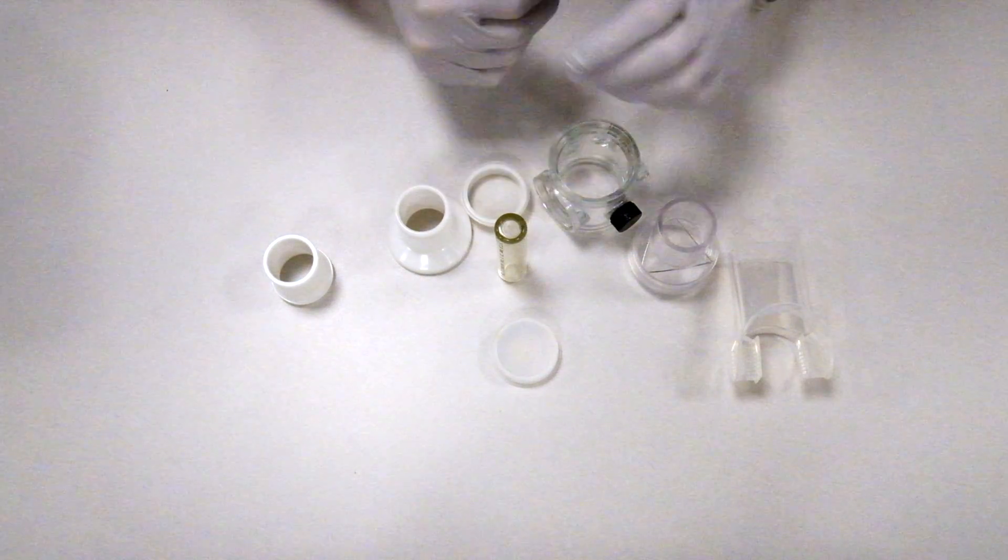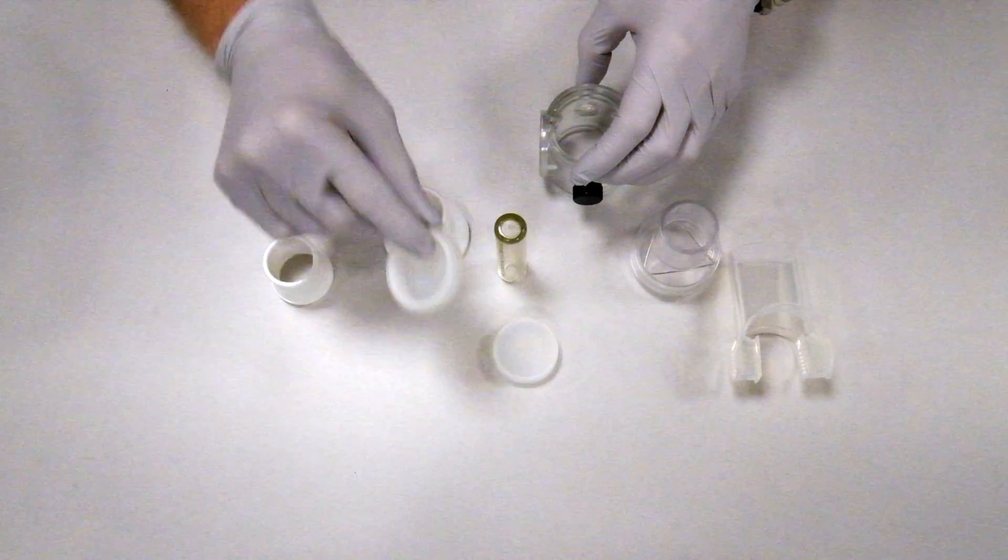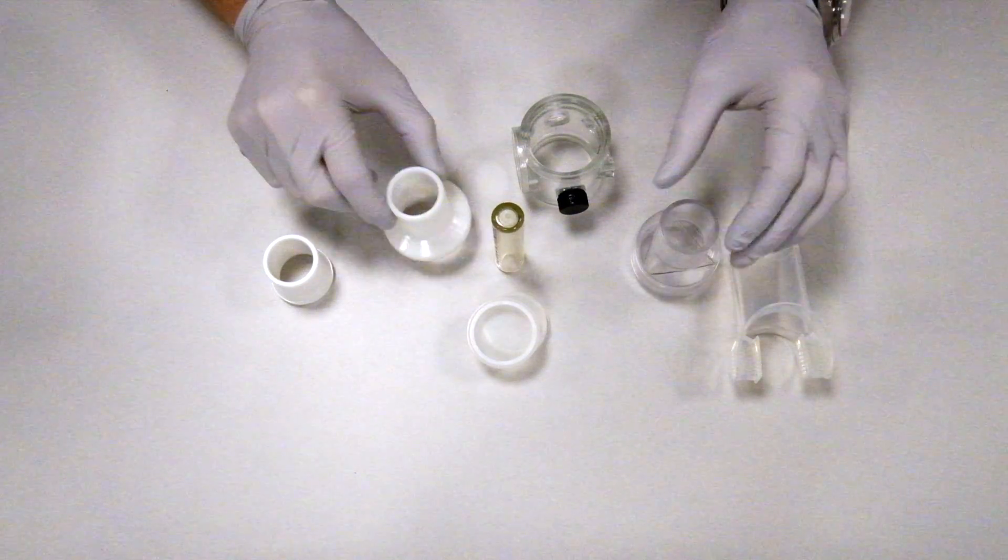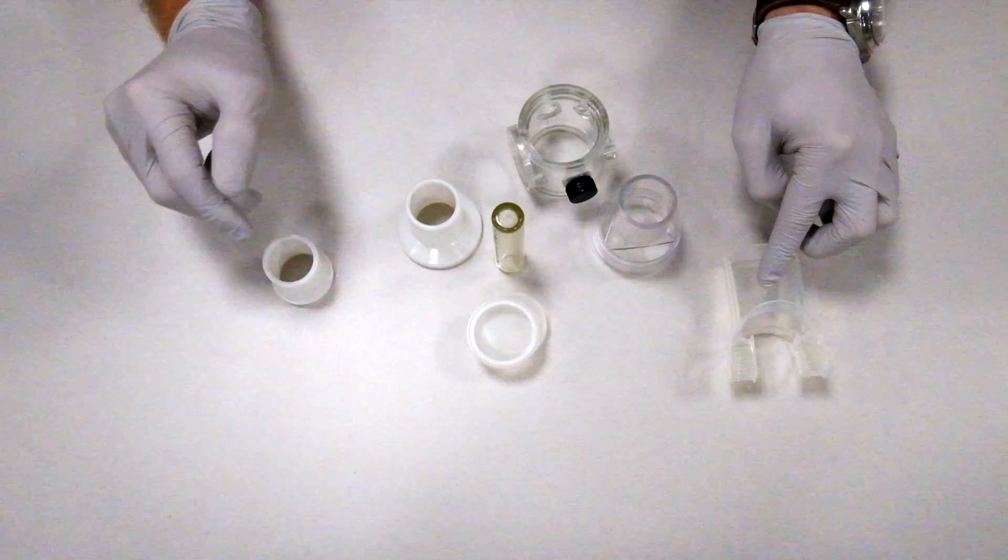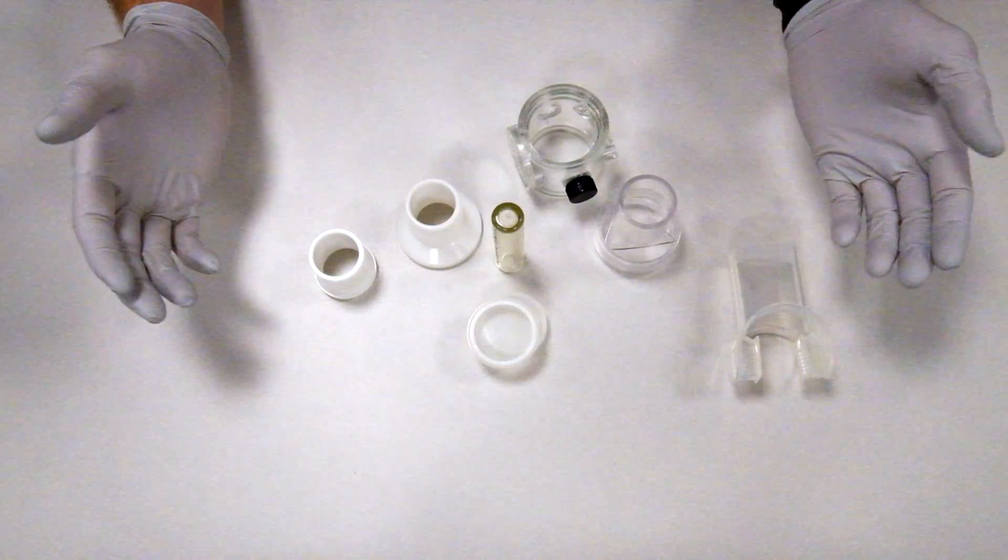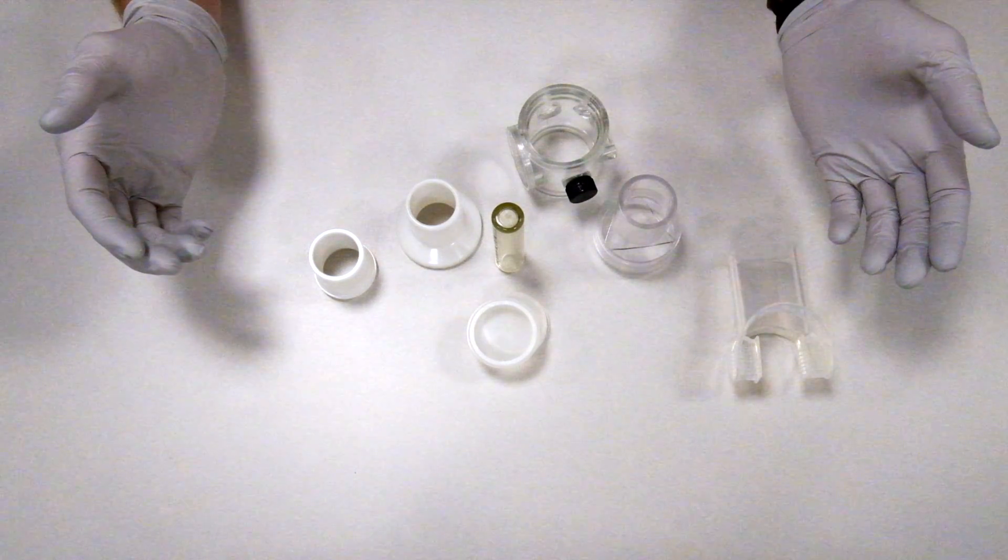You'll need these parts: a body, two one-way valves, a saliva trap, a white adapter, a clear adapter, a mouthpiece, and a mouthpiece adapter. You'll also need gloves when putting together this mouthpiece for sanitary purposes.